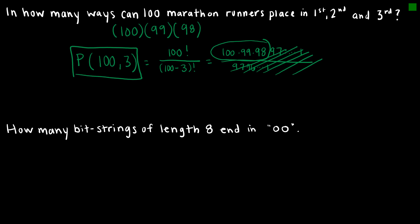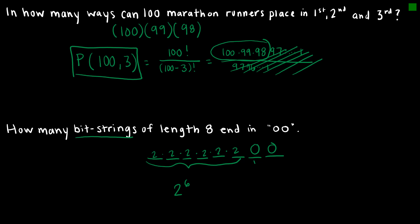How many bit strings of length 8 end in 0, 0? This is a permutation because order makes a difference. With 8 positions and the last two fixed as 0, 0, we look at the 6 remaining positions. Each has two choices — 0 or 1. So the answer is 2 to the 6th, because those last two positions are set and each contribute only one option, giving us 2^6.